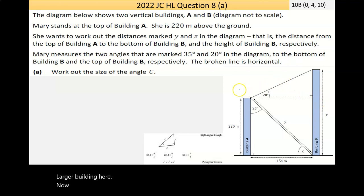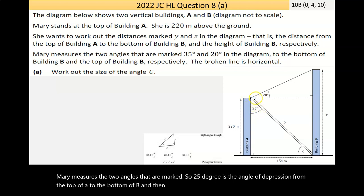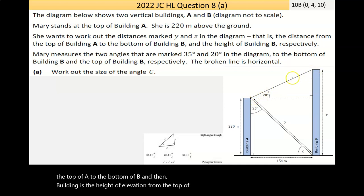Mary measures the two angles that are marked. So, 35 degree is the angle of depression from the top of A to the bottom of B. And then, building B is the height of elevation from the top of A to the top of B.